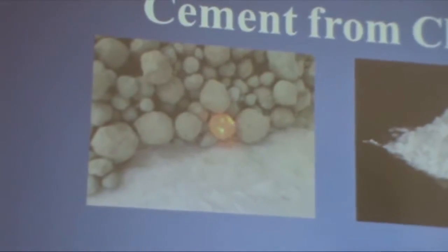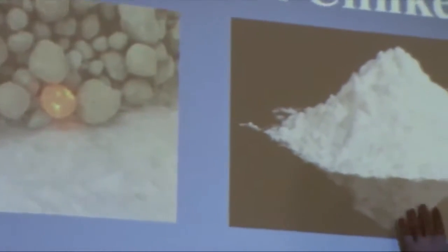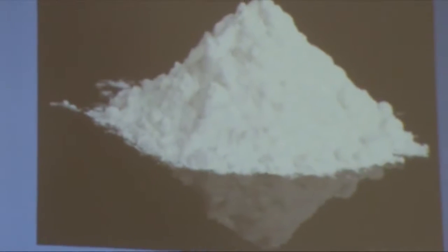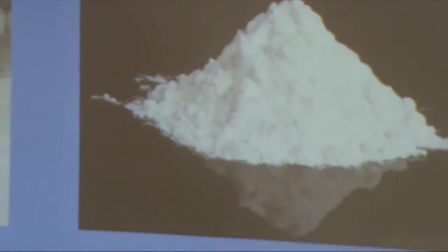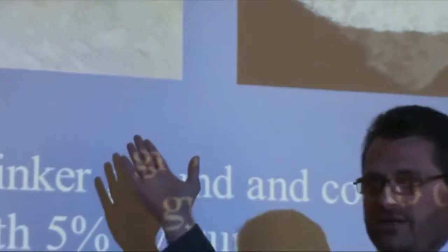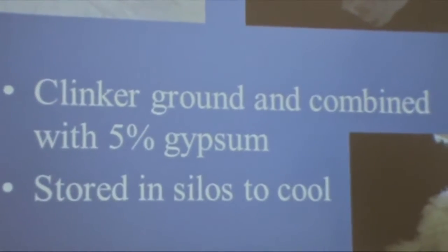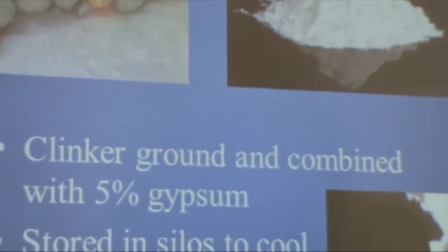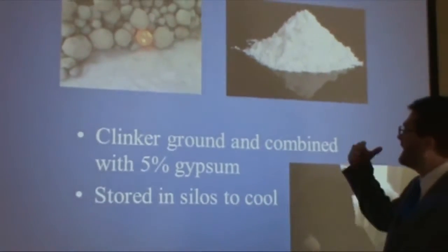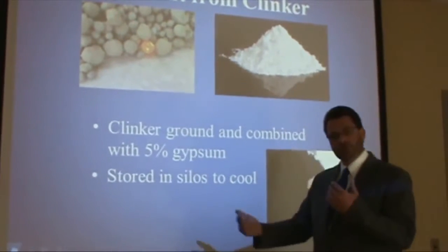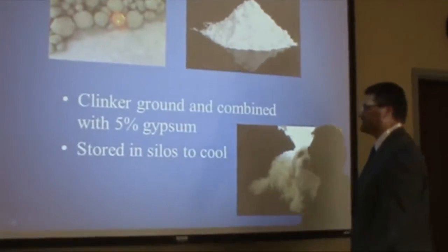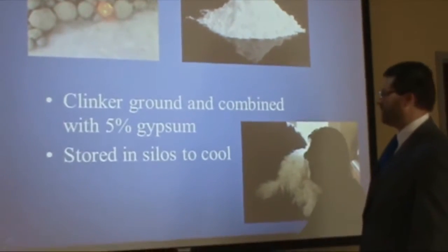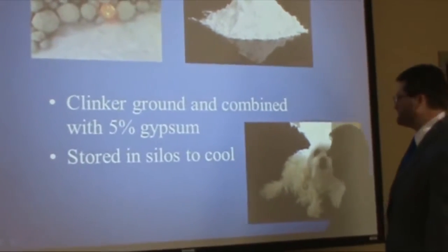That clinker is ground up. Gypsum, a naturally occurring element, is added at about 5%. Without gypsum, the cement would hydrate very quickly and harden too fast to be workable. Gypsum is added in small amounts to control set time and keep it from setting up too quickly, so people have time to place and work it before it hardens.